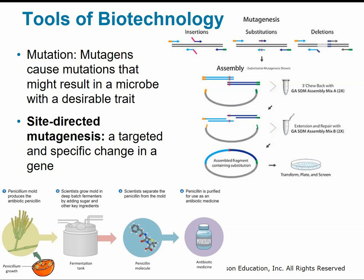Mutations are another important tool of biotechnology because mutations are responsible for our biodiversity — they help drive evolution. Microbiologists discovered that they could create new microbe strains by exposing them to mutagens — those mutation-generating substances. Using these mutagens, we can possibly trigger mutations that result in a microbe with a more desirable trait. For example, this was used to increase the amount of penicillin produced by about a thousand times. Site-directed mutagenesis is where we have a specific targeted change in a gene.